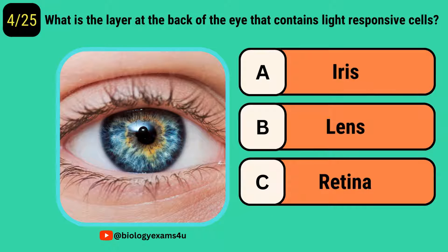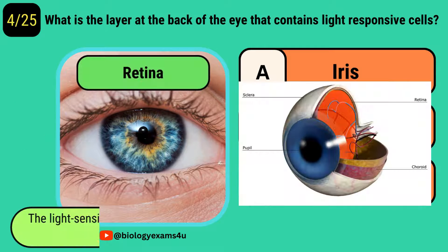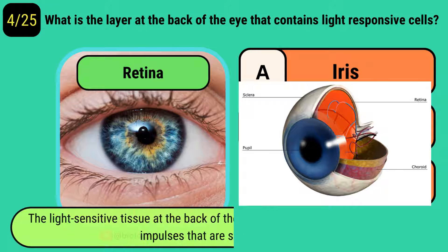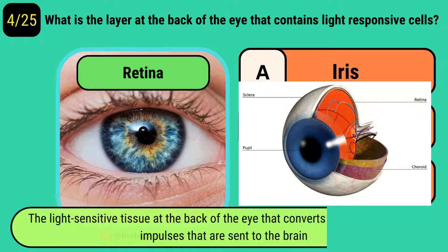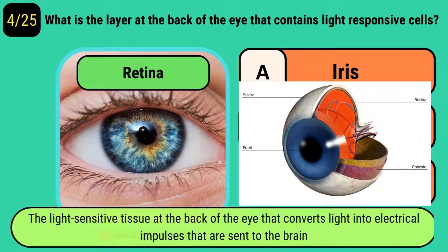What is the layer at the back of the eye that contains light-responsive cells? The answer is retina. The retina is a light-sensitive tissue at the back of the eye that converts light into electrical signals that are transmitted to the brain.